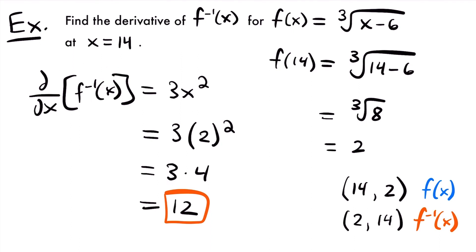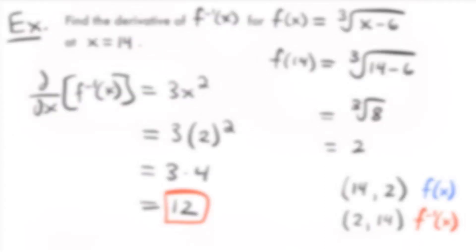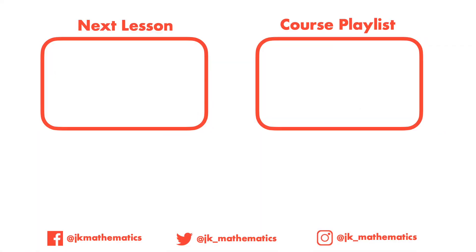When you have a problem where you want to find the derivative of an inverse function evaluated at a particular x value, make sure you find the full coordinate point and then reverse it so that you have the coordinate point for the inverse function — that's what you plug into the derivative. That's all for this video. If you have any questions, feel free to leave them in the comments. See you next time.